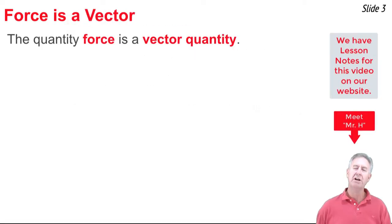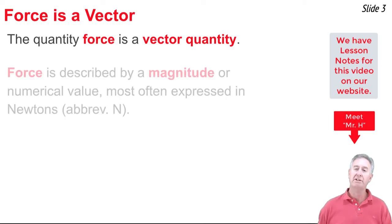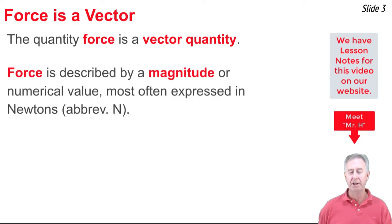To begin, let's talk about force. Force is a vector quantity. And saying that force is a vector quantity means, like any vector, it's a quantity that has a magnitude and a direction. When it comes to the magnitude of the force, or the strength of the force, we're referring to the numerical value associated with the force, usually expressed in a unit known as the Newton, abbreviated with the letter N.